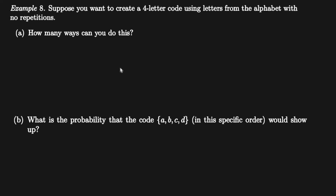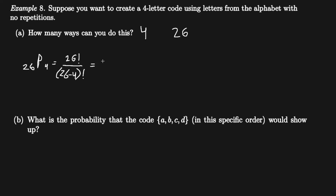Moving on to Example 8: suppose you want to create a four-letter code using letters from the alphabet with no repetition. How many ways can you do this? There are 4 letters for the code and 26 letters in the alphabet, so the total is 26 permute 4, which equals 26 factorial over (26 minus 4) factorial.